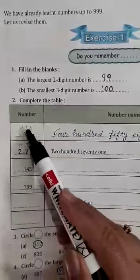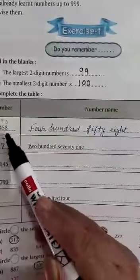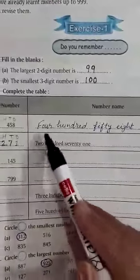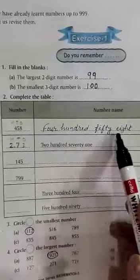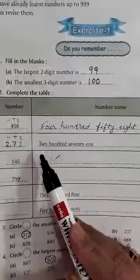5 tens, 50. And 8 ones, 8. 4 hundred, 50, 8. So, in this way, you have to write the number name.